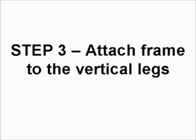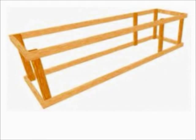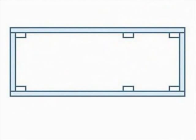Step three, attach the upper frame to the vertical legs. The upper frame is constructed in the same way as the base frame. Position it as shown in this diagram and nail it flush with the top of the vertical legs. Typically you'd use four nails per connection.